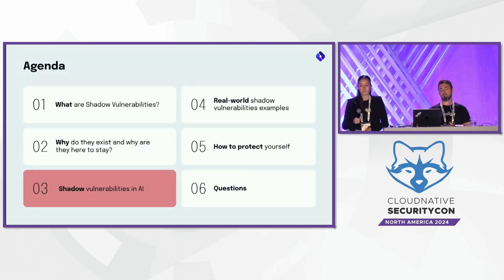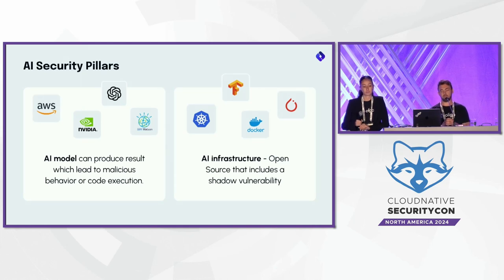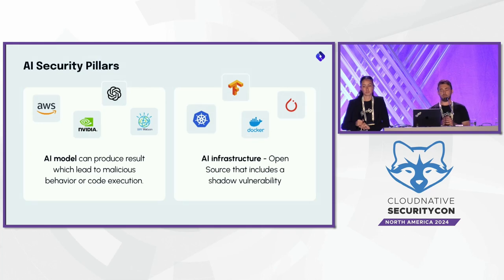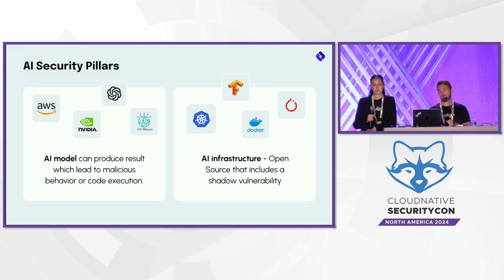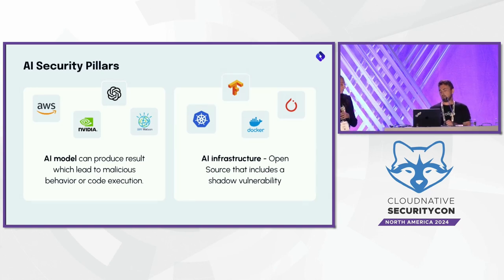Let's understand why shadow vulnerabilities are so common specifically in AI. To understand it, let's divide the AI security landscape into two main pillars. First, there's the AI model and everything around it — the inputs, the outputs, and how we treat them at the application level. Then we have the AI infrastructure, which is usually open source because it's a freshly emerging technology. Not every project is a CNCF project, and they do include shadow vulnerabilities. Both pillars might include shadow vulnerabilities.